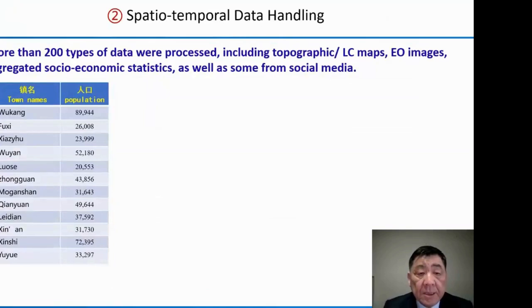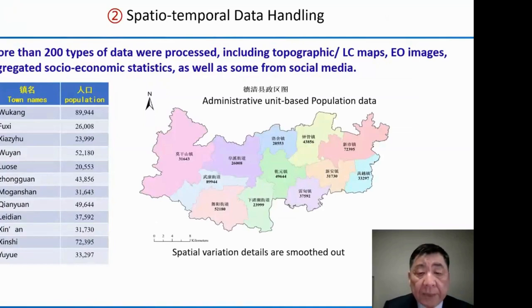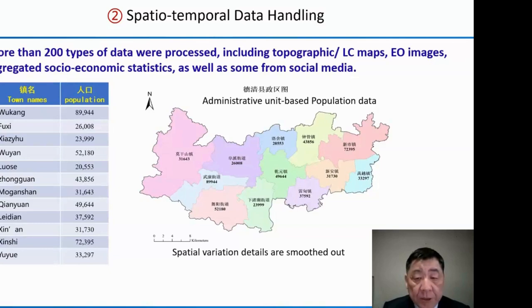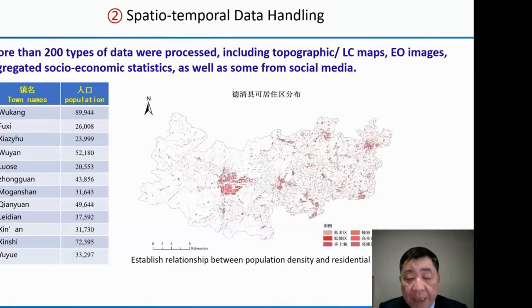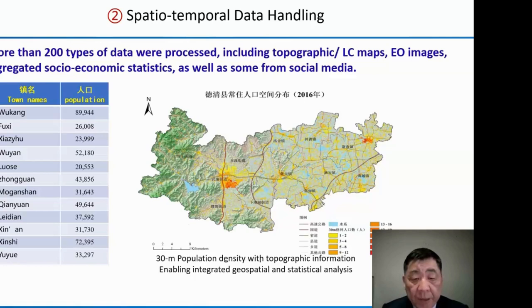For the second step, we collected more than 200 types of data including topographic data, land cover data, earth observation imagery, socio-economic statistics, and data from social media. The population data is based on administrative units, but the spatial details are smoothed out. To get detailed spatial variation of population, we used land cover data and established the relationship between population density and residential areas, deriving population density at 30-meter spatial resolution. This provides much more spatial detail and enables better geospatial and statistical analysis.